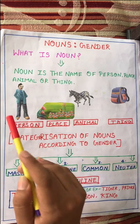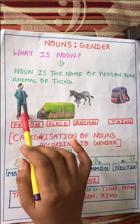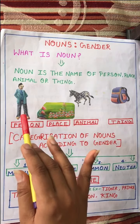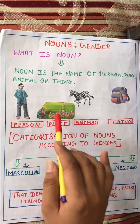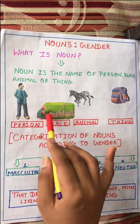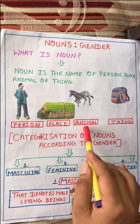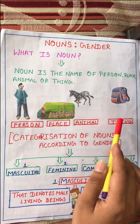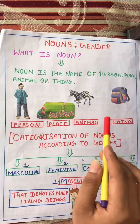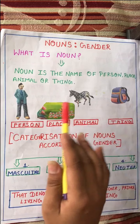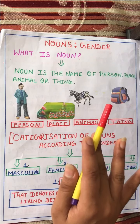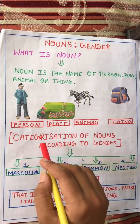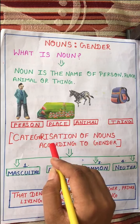We will learn it by some pictures. This is a person — we can call it a man. This is a place — this is a garden, the name of the place is garden. This is an animal — the name of the animal is zebra. This is a thing — and the name of the thing is a bag. So, a noun is the name of any person, place, animal, or thing.